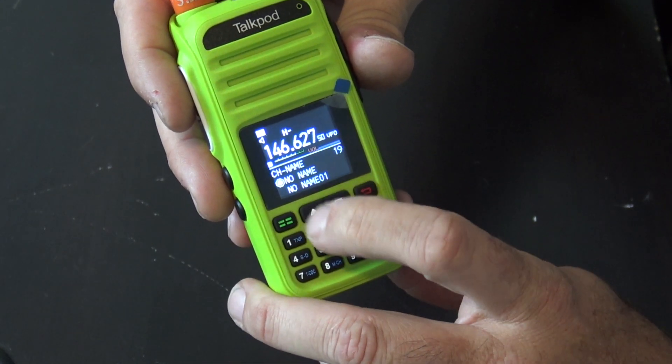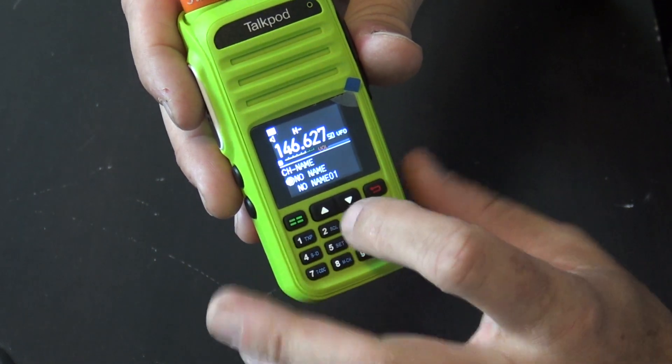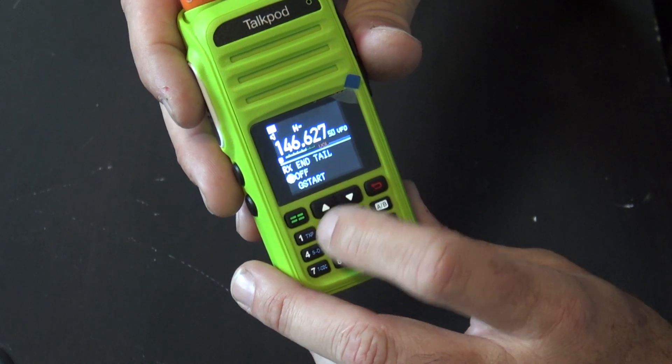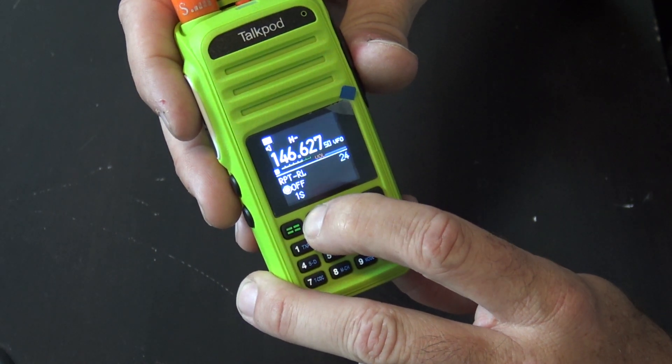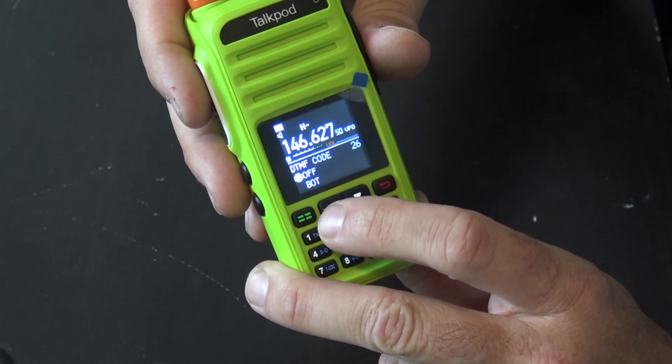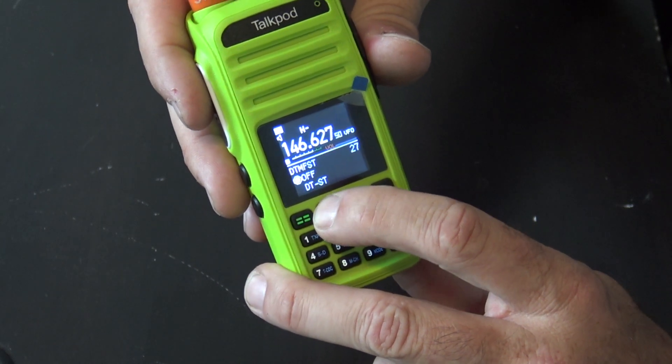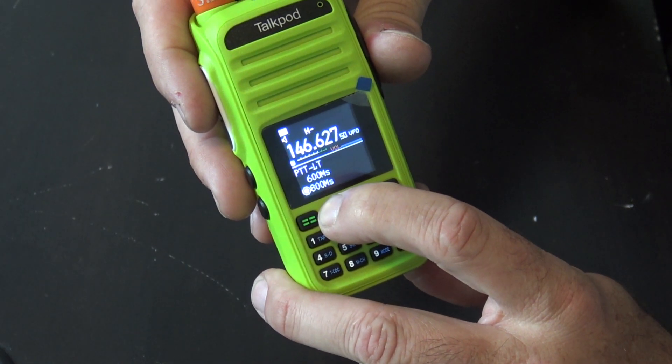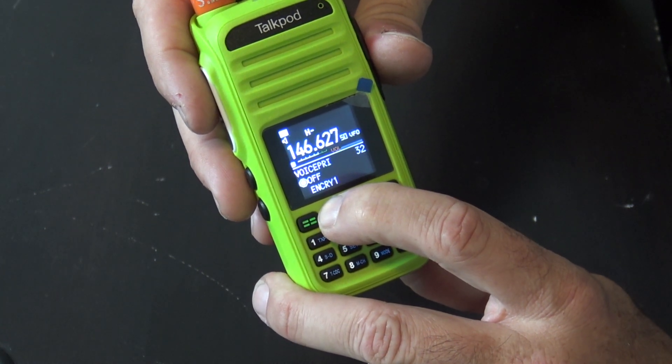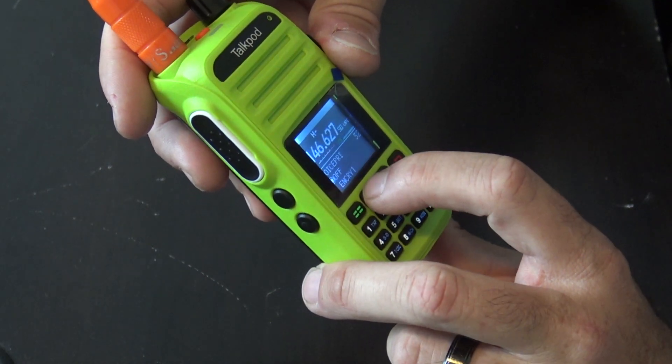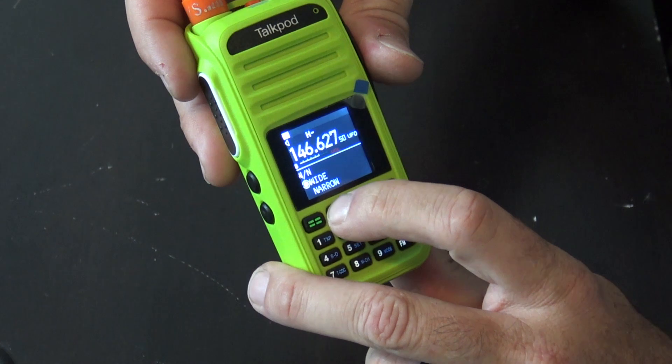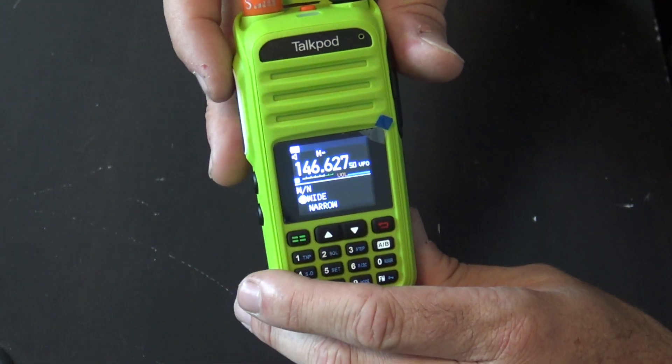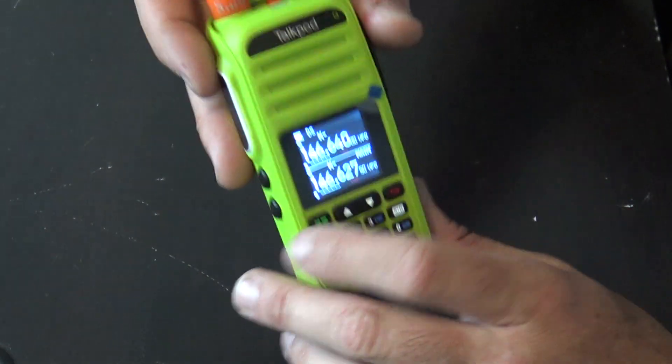There's a lot of things in here. Channel name, you can name them in the programming. Receive end tail, that's a squelch tail at the end, you can turn it off or on. You have a 1750 hertz burst and some other ones. PTT, VOX, VOX delay, voice priority or encryption. We don't encrypt anything on ham radio. So timeout timer, wide and narrow, stuff like that.